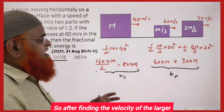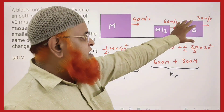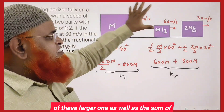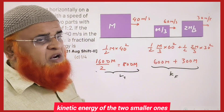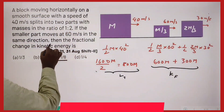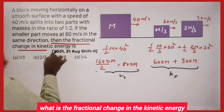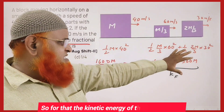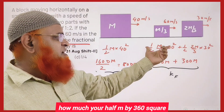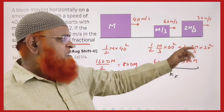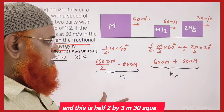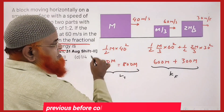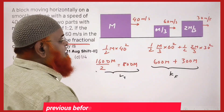Now find the kinetic energy before and after splitting. The initial KE of the whole block is ½M(40)² = 800M. After splitting, KE of the smaller block is ½(M/3)(60)² and KE of the larger block is ½(2M/3)(30)².